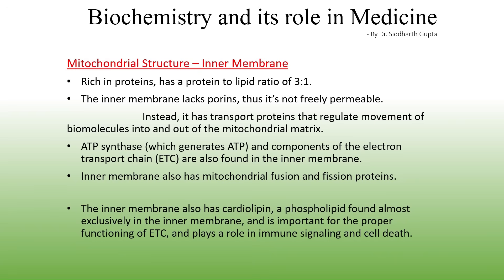The inner membrane is rich in a unique phospholipid called cardiolipin, which is almost exclusively found in the inner mitochondrial membrane. Cardiolipin is important for the proper functioning of the electron transport chain and also plays a role in hormone signaling and programmed cell death, or apoptosis.